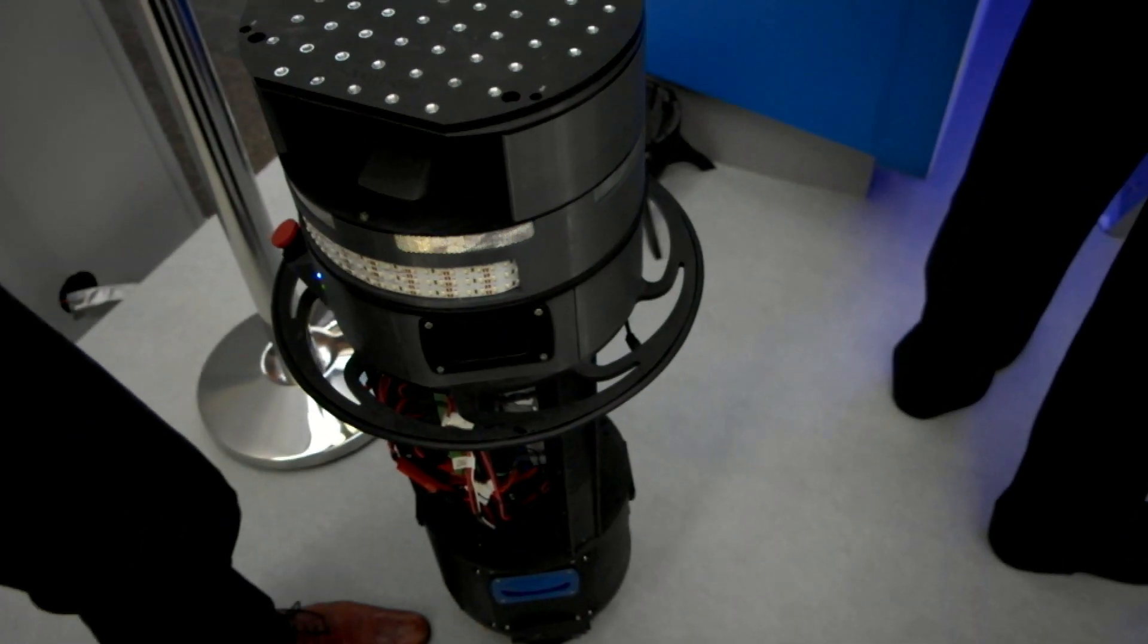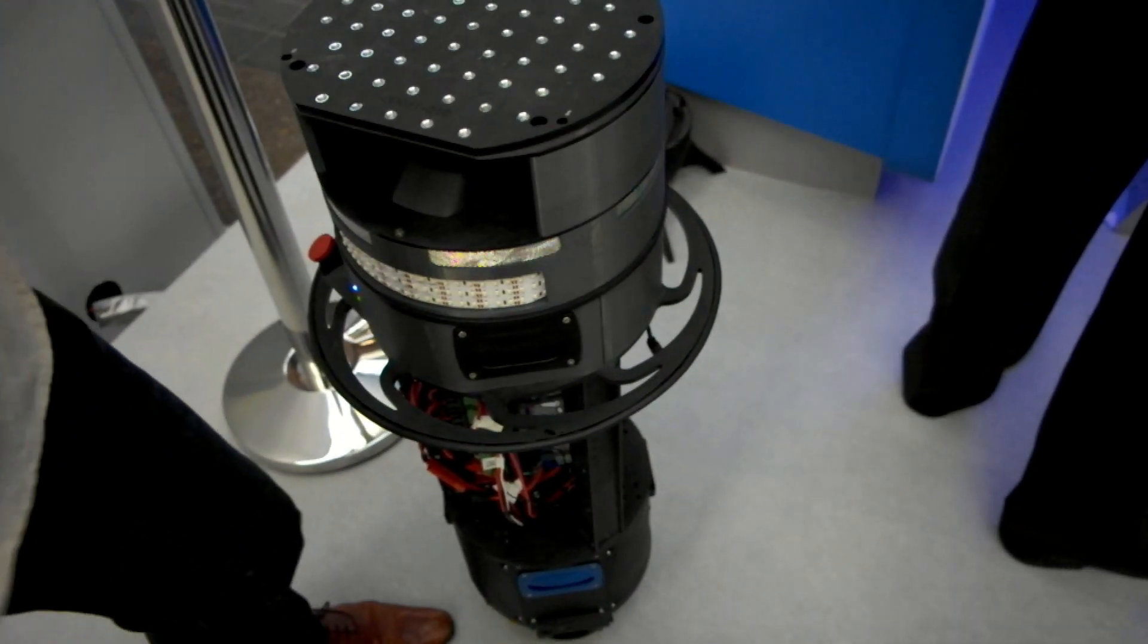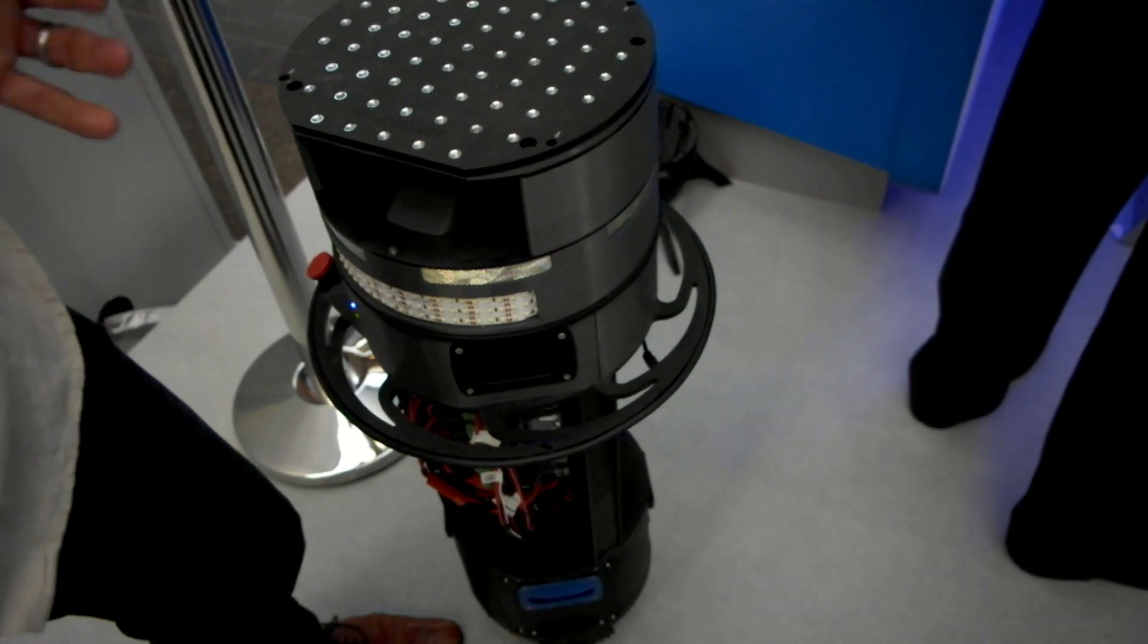We have safety legs, six safety legs that will deploy in the event that the robot leans beyond six degrees.